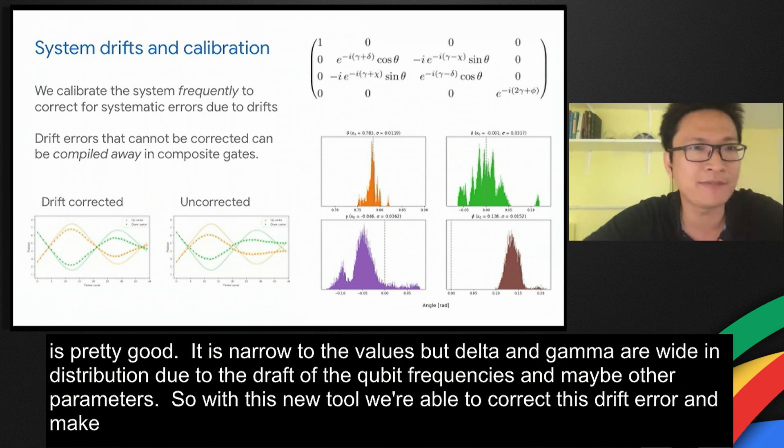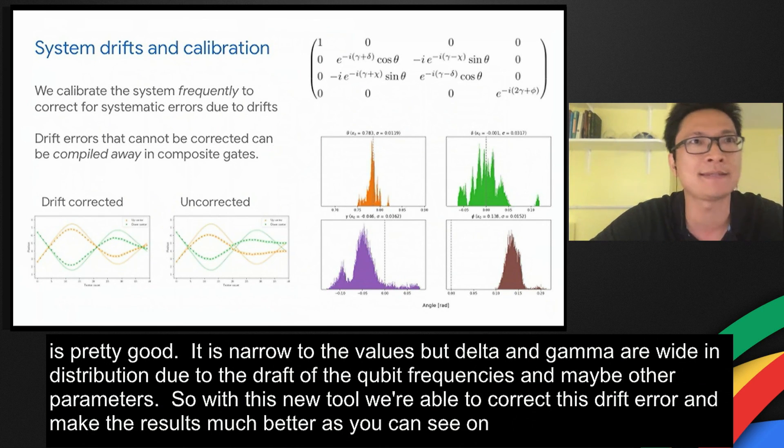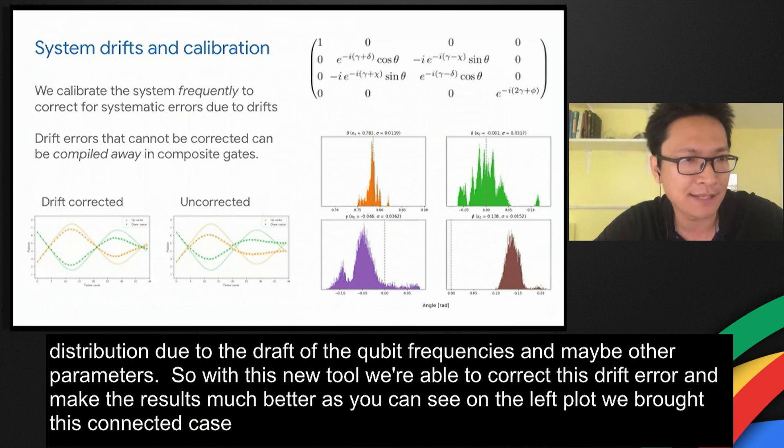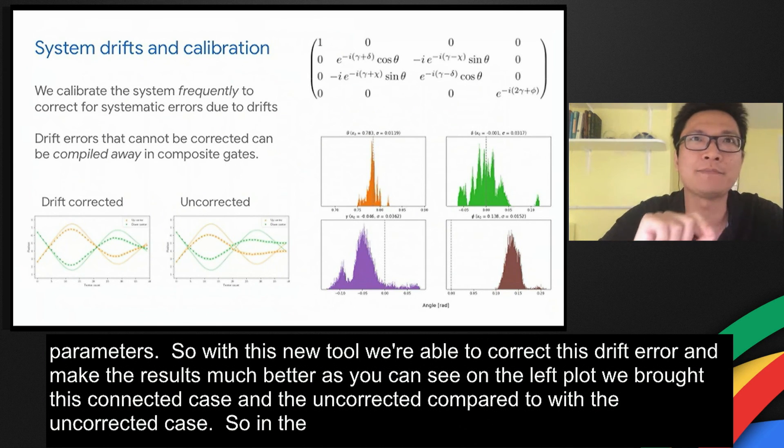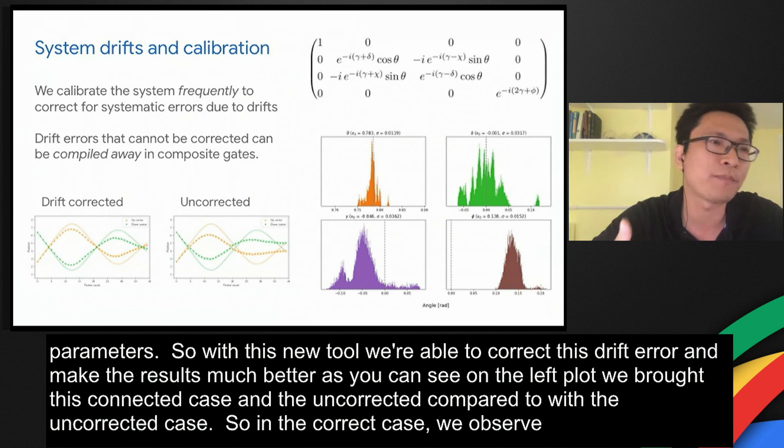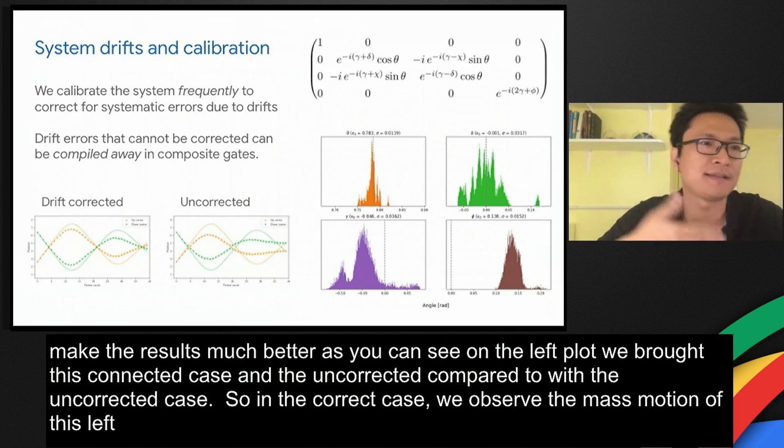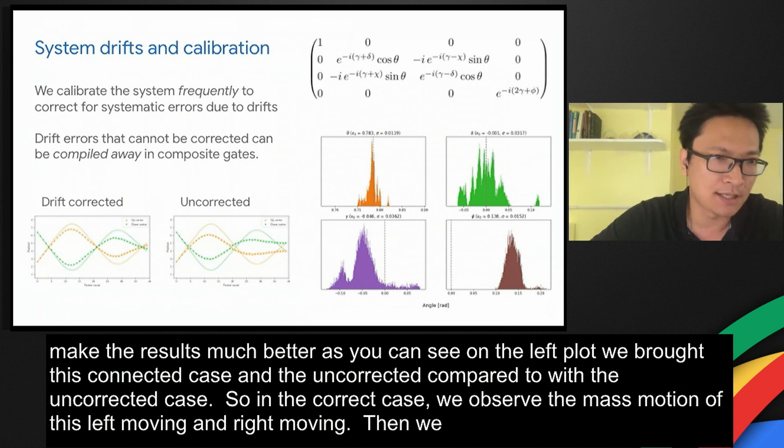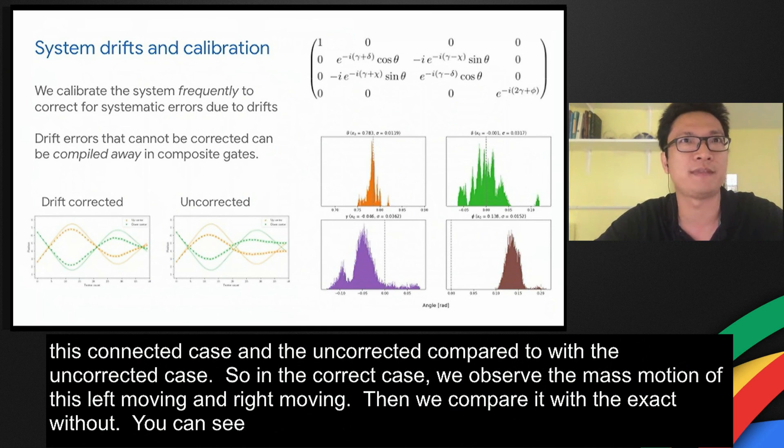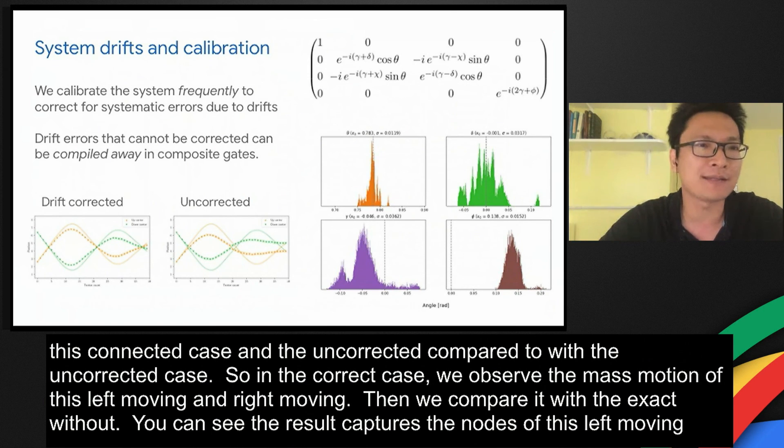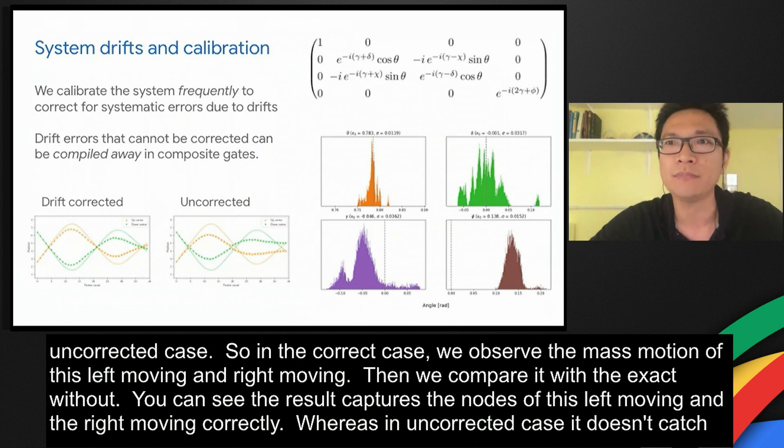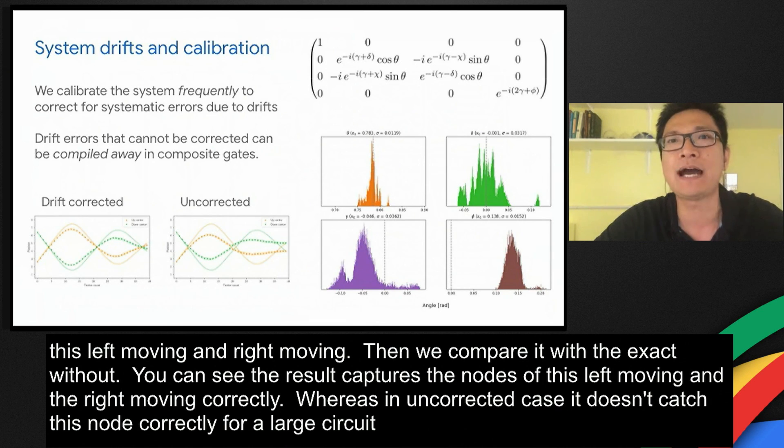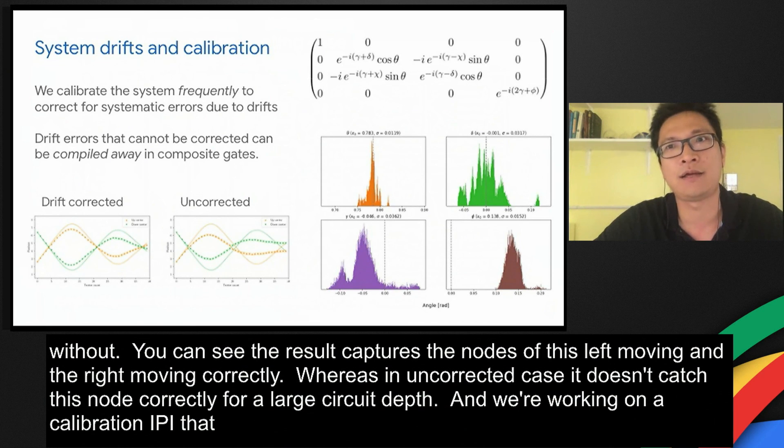As you can see on the left plot, we plot this drift corrected case and compare it with the uncorrected case. In the drift correct case, we observe the center of mass motion of this left moving and the right moving wave packets. And we compare it with the exact result. As you can see, the result captures both nodes of this left moving and the right moving wave packets correctly. Whereas in the uncorrected case, it doesn't catch this node correctly for a larger circuit depth. We're working on a calibration API that you guys can also use it on the quantum engine.